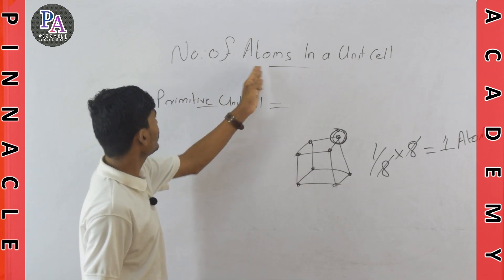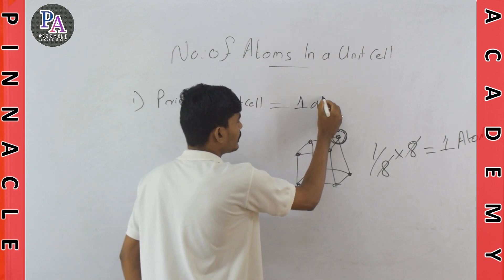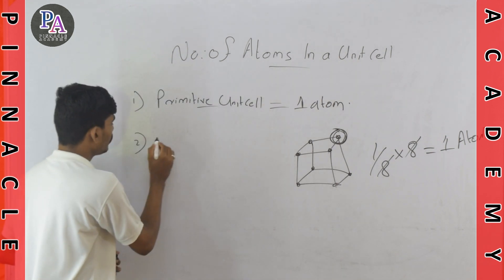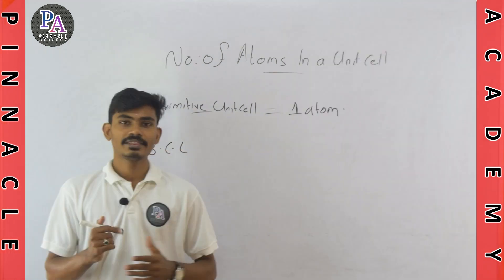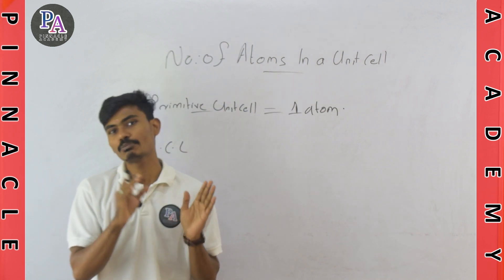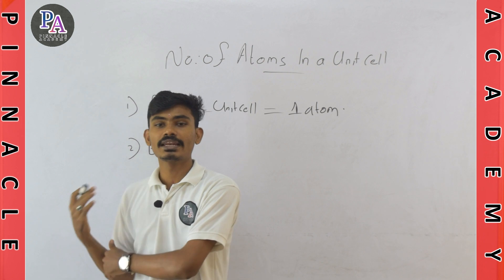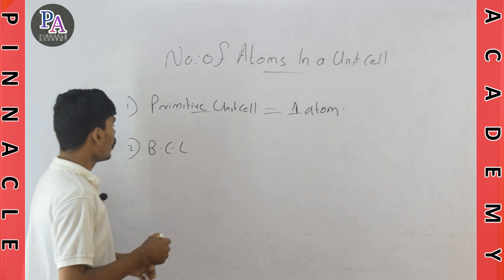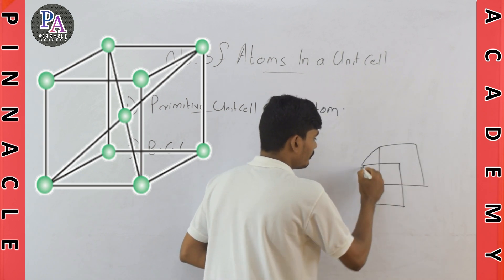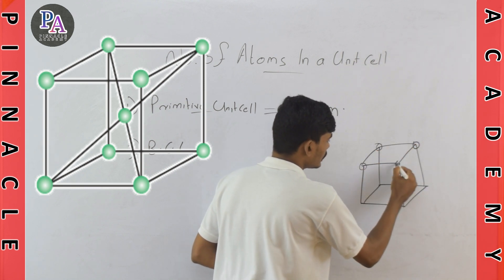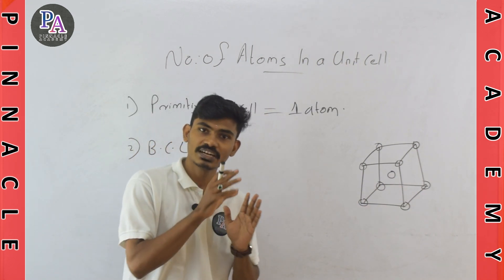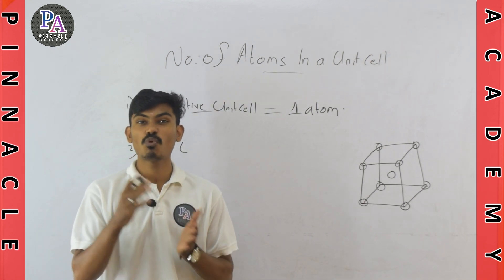We already found out that in a primitive unit cell, only one atom is present. Now we can move on to BCC — body-centered cubic. What is the body-centered cubic? The constituent particles are present at the eight corners, and there is one central particle at the center of the body.